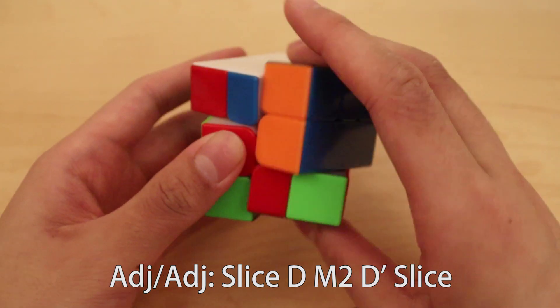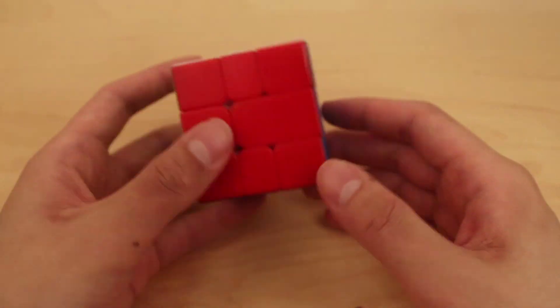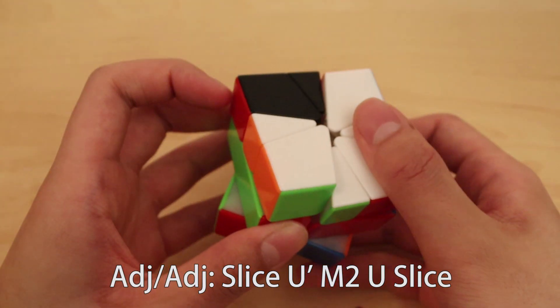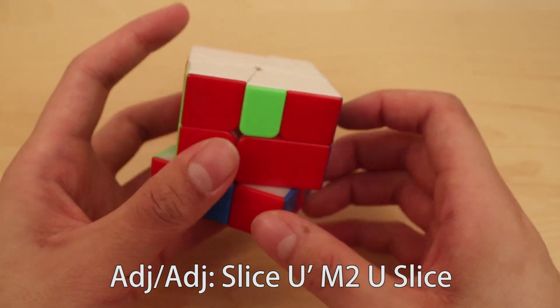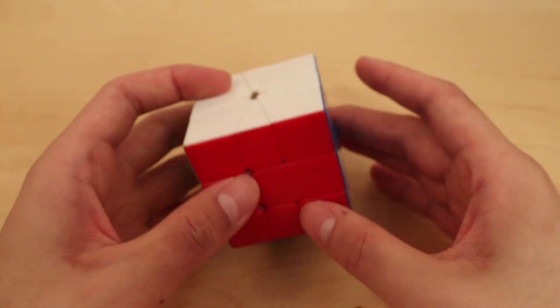There's actually more angles to do edge-edge from. You can do stuff with the bottom line like this. Slice U prime, M2, U, slice. And that's edge-edge from this angle. So there's actually a ton of angles to do edge-edge from, which is decently important in my opinion.